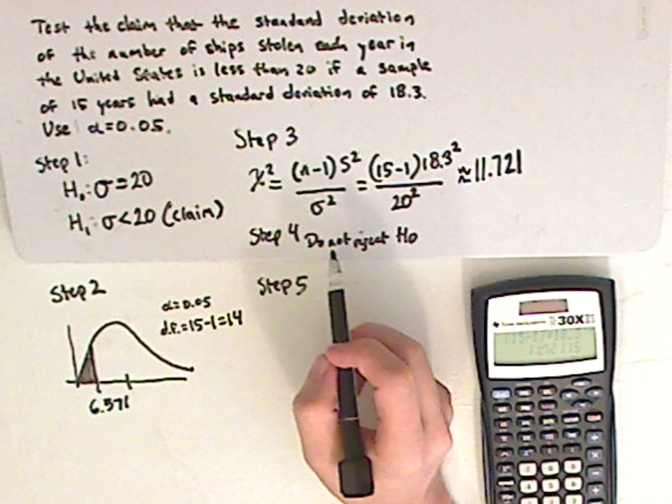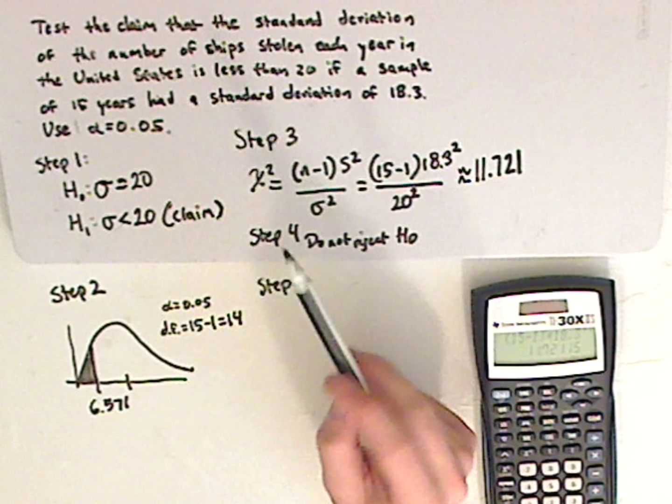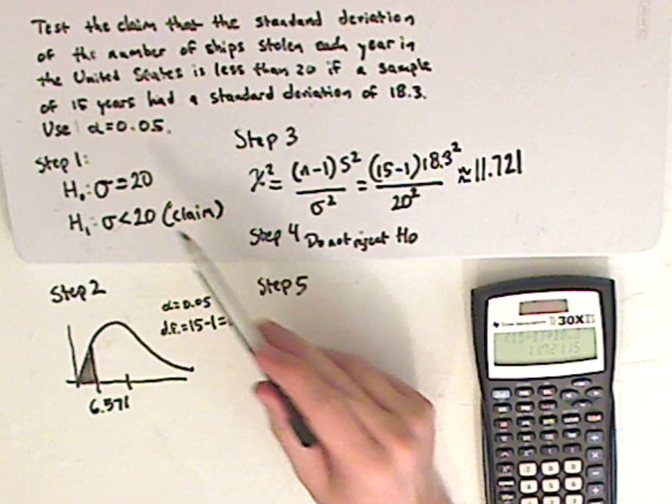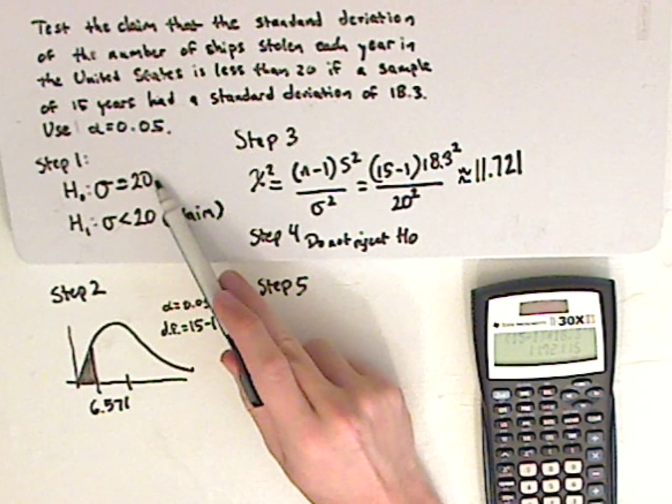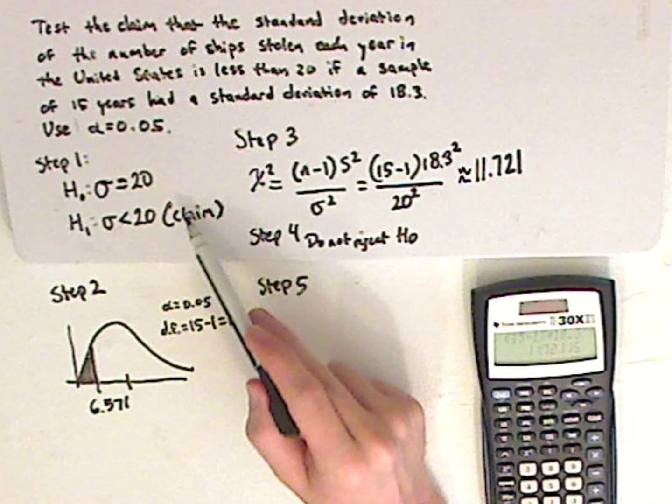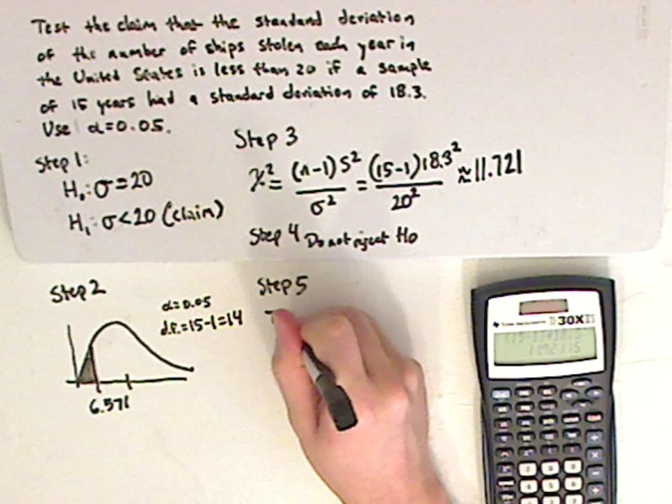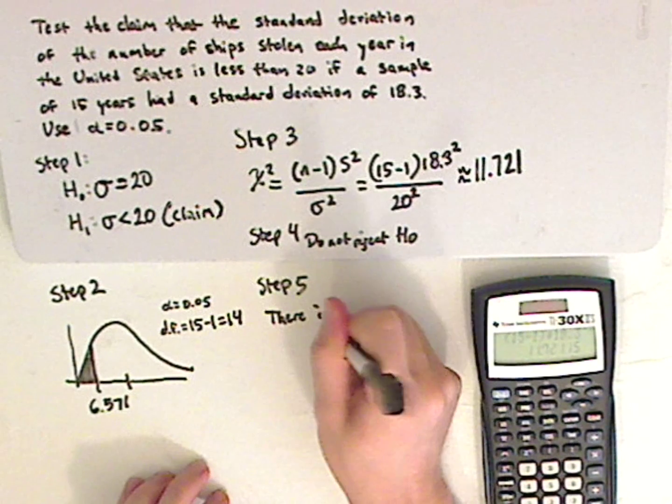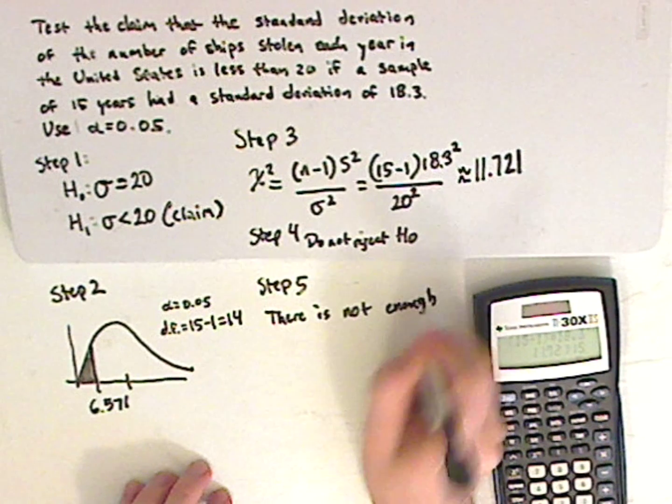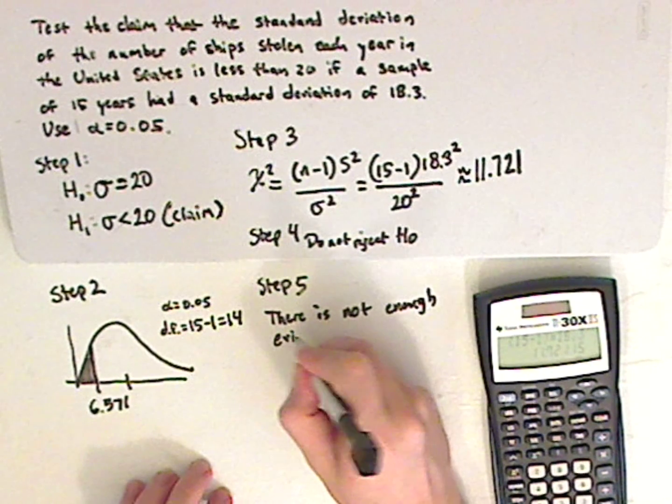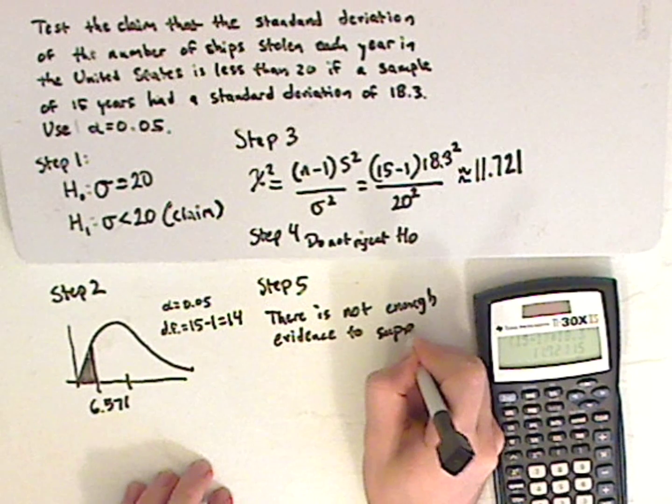Step number five. Based upon your decision and your claim, that's how you're going to write your conclusion. So do not reject, which means that I'm not accepting the claim because I'm accepting this. Since I'm not accepting the claim, there's not enough evidence to support it. So there is not enough evidence to support the claim.